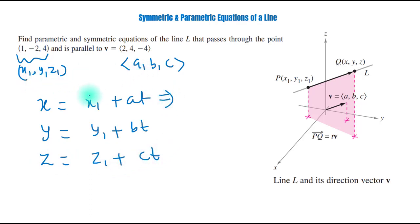So, now we will substitute the corresponding values and we will get x equals 1 plus 2t. This implies y equals -2 plus 4t.